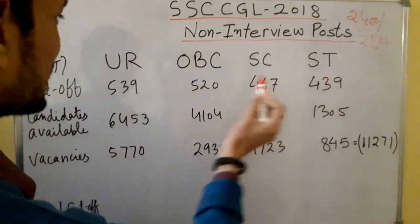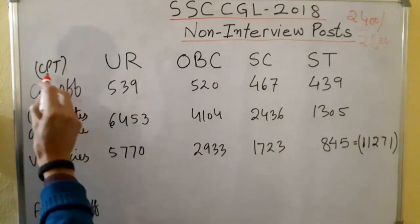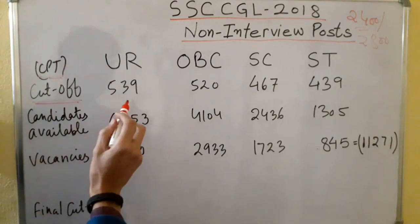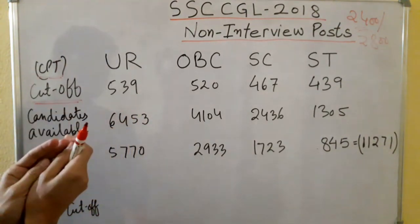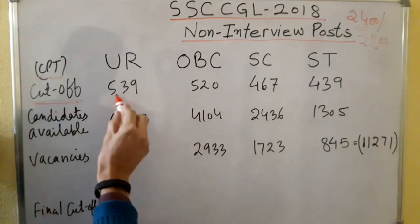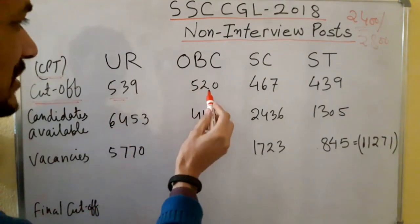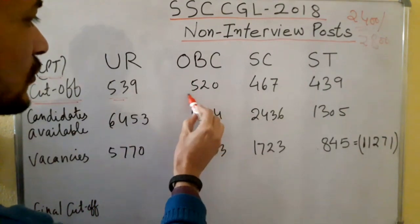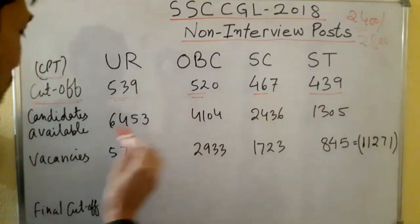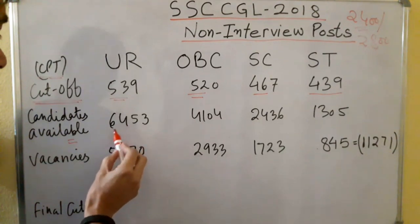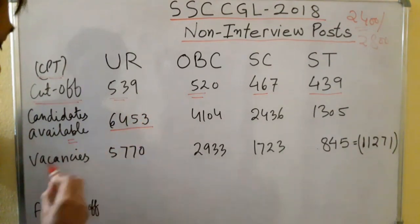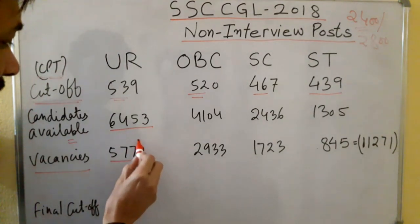So first of all, let's look at the CPT cut-off. The CPT cut-off for UR was 539. For OBC it was 520, SC was 467, and ST was 439. Now, the UR candidates available are 6453 and the vacancies are 570. So total vacancies are 570 for this non-interview category.